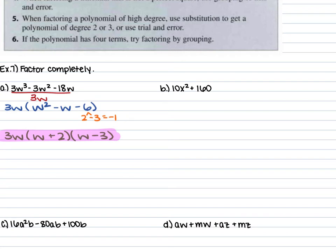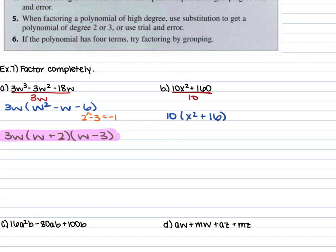For Example 7B, we have 10x squared plus 160. Both terms are divisible by 10, so factor out 10, leaving x squared plus 16. We have a binomial. Check if it's a difference of squares, sum of cubes, or difference of cubes. We can take the square root of x squared and of 16, but there is no negative sign between the terms, so this cannot be factored further. The answer is 10 times x squared plus 16.